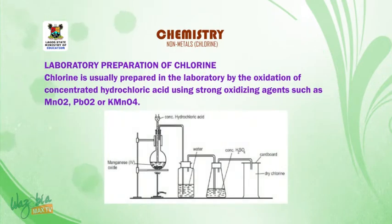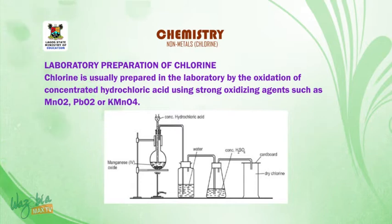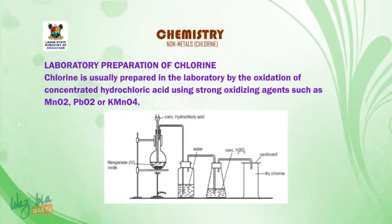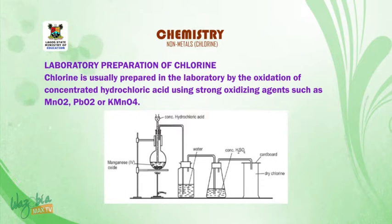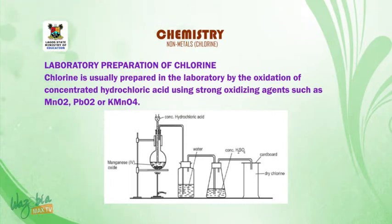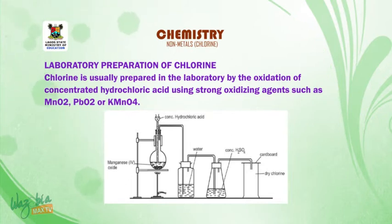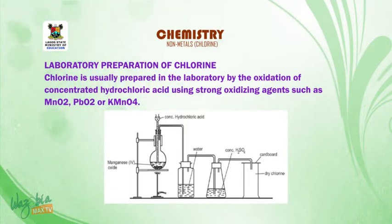Laboratory preparation of chlorine. Chlorine is usually prepared in the laboratory by the oxidation of concentrated hydrochloric acid using strong oxidizing agents such as manganese(IV) oxide, lead(IV) oxide, or potassium permanganate. In the setup for the preparation of chlorine gas in the laboratory, we have a source of heat, a round-bottom flask supported by a retort stand with clamp, a thistle funnel and a delivery tube fitted in the round-bottom flask, a Woulfe bottle containing water as the purifying agent, a conical flask containing concentrated tetraoxysulfate(VI) acid, and a gas jar where the dry chlorine gas is collected.